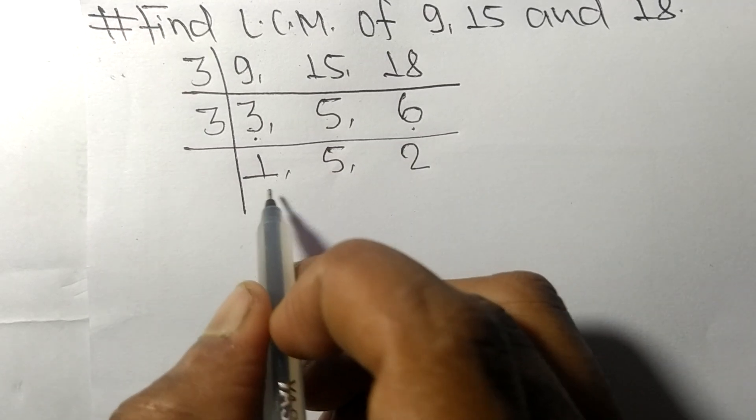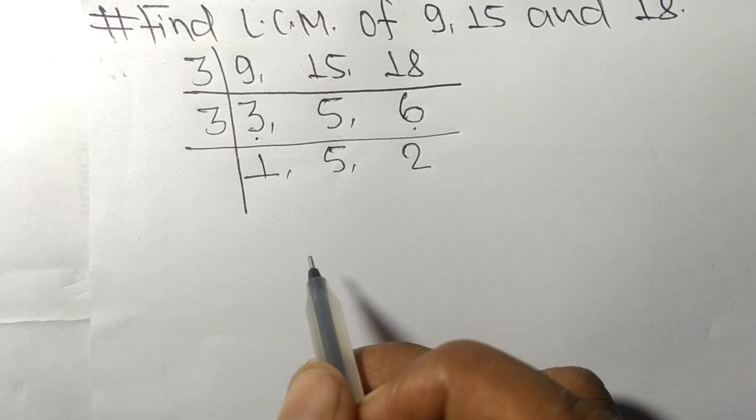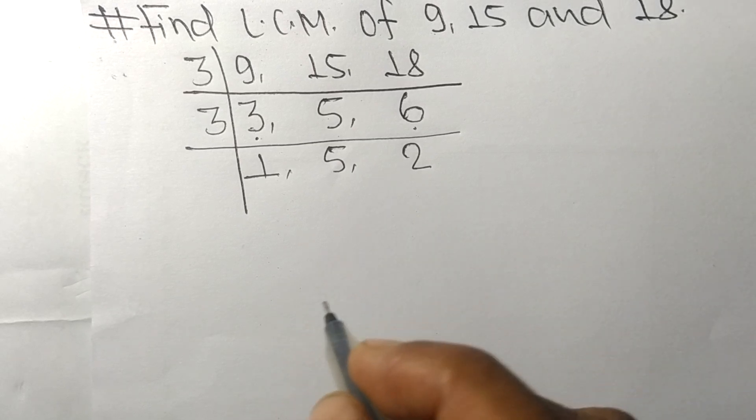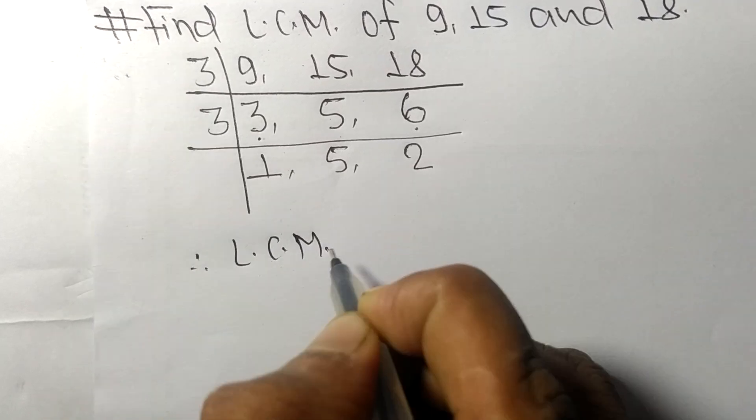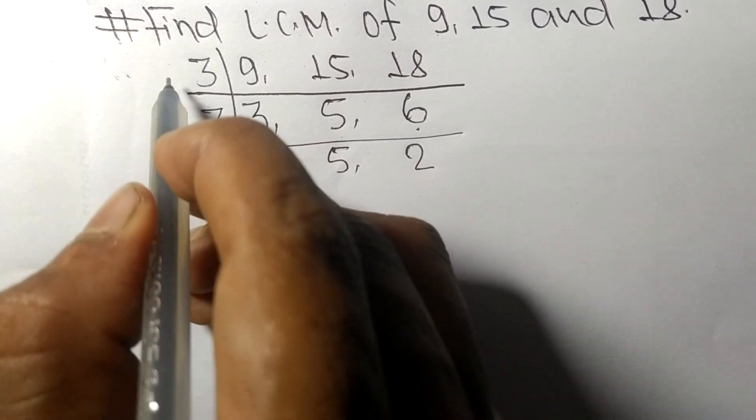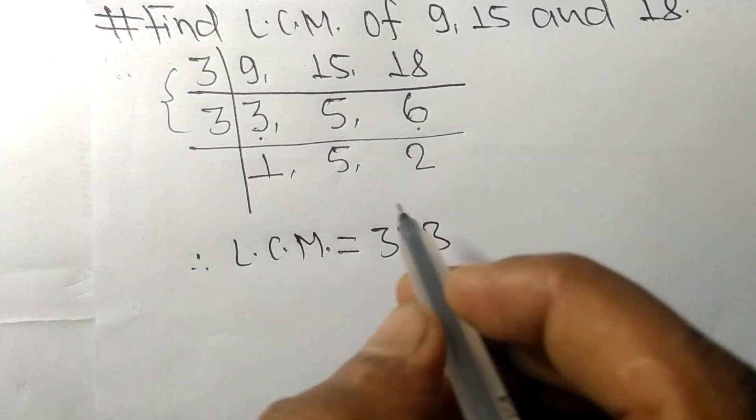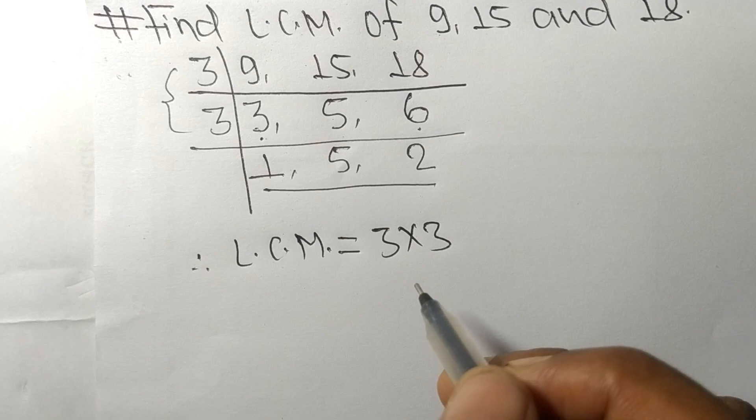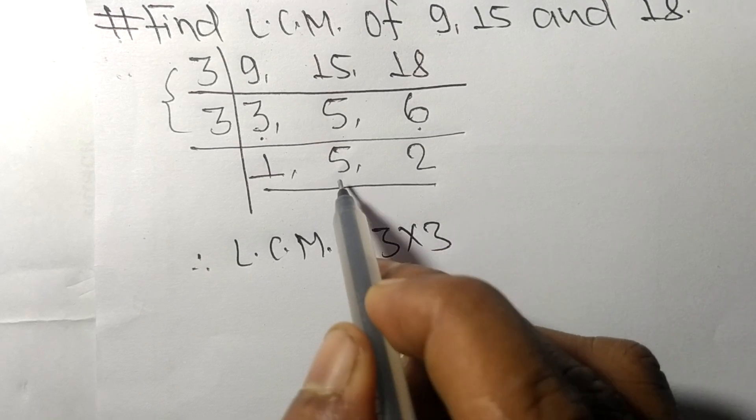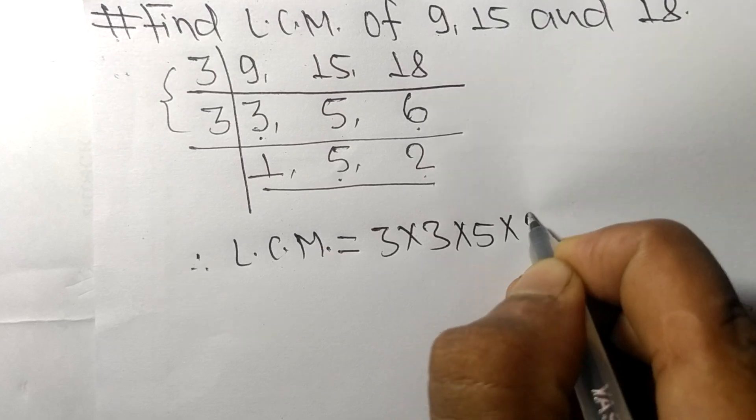So now we got 1, 5 and 2 which are not exactly divisible by same number. Therefore, its LCM is equal to from this side it is 3 times 3. From this side we choose the numbers greater than 1 that is 5 and 2.